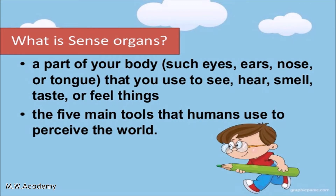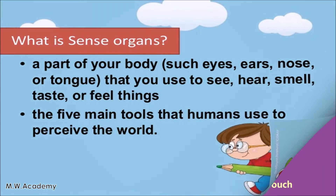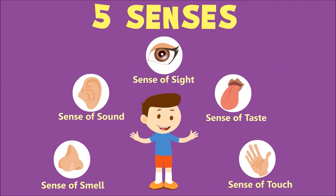Sense organs are the organs that tell us about the things happening around us in our environment. There are five sense organs in our body: skin, eyes, ears, nose, and tongue. Let's discuss them one by one.